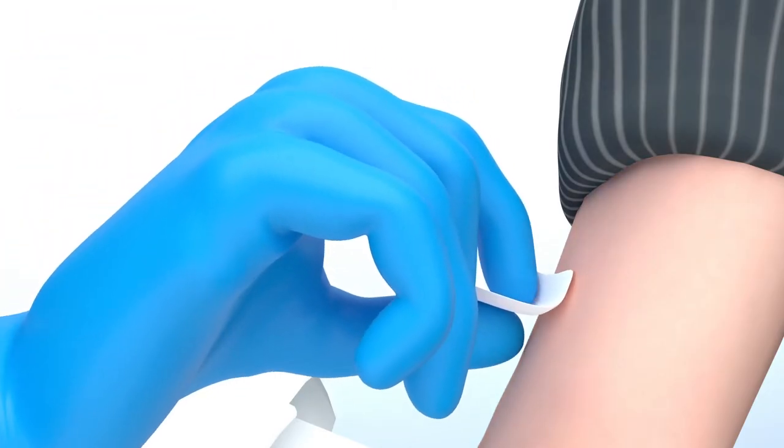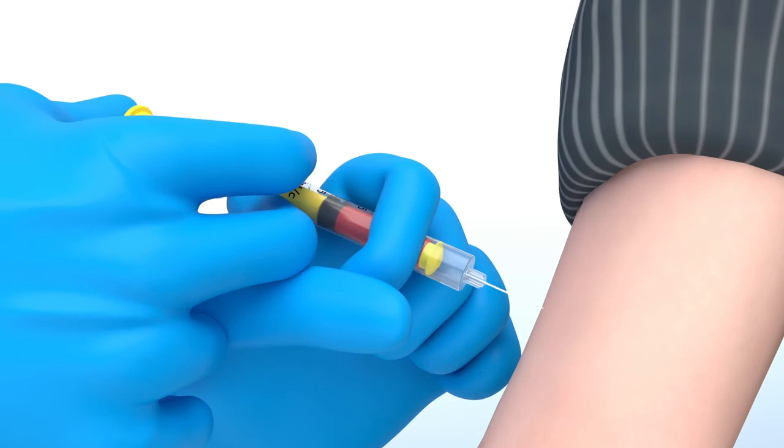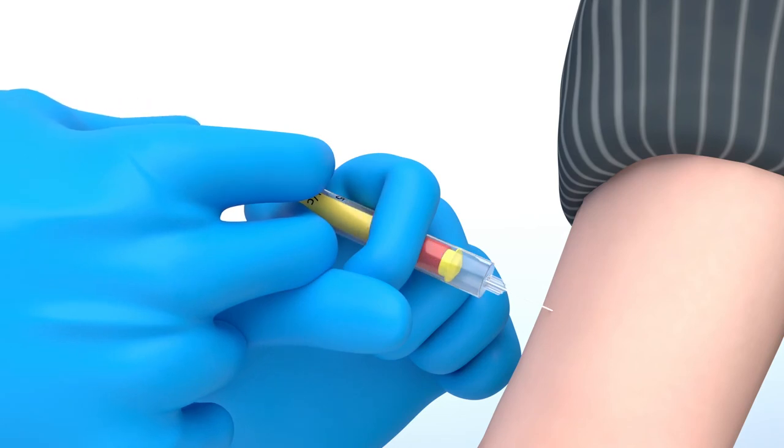Administer the injection, firmly pushing the plunger past zero to the top of the syringe. This action will automatically activate the retraction, drawing the needle safely into the syringe plunger.